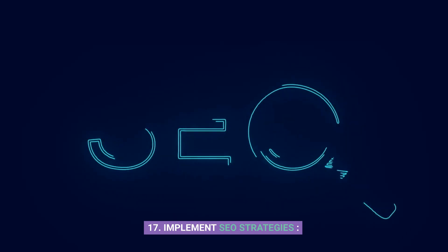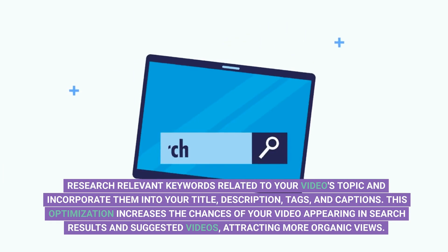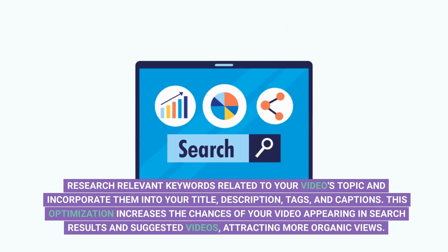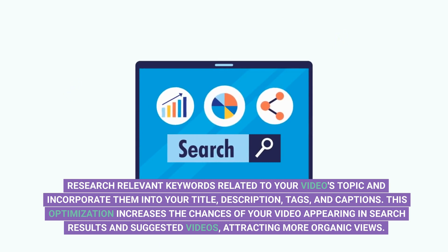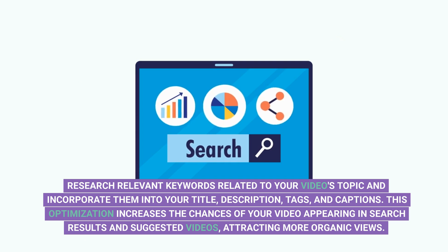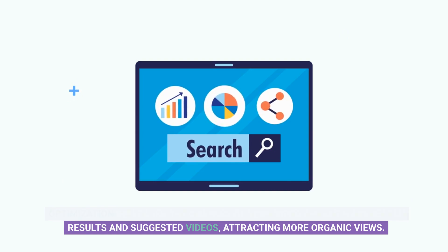Step 17: Implement SEO strategies. Research relevant keywords related to your video's topic and incorporate them into your title, description, tags, and captions. This optimization increases the chances of your video appearing in search results and suggested videos, attracting more organic views.